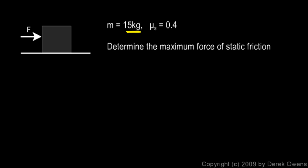we're given a mass of 15 kilograms and the coefficient of static friction, you see the little s there, mu sub s, is equal to 0.4 and there's no units on mu sub s. It's what we call a dimensionless number. It's just a number, no units, 0.4. We're told to determine the maximum force of static friction.